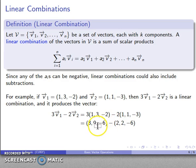3 minus 2, 9 minus 2, negative 6 minus negative 6. And that gets me my final vector: (1, 7, 0).